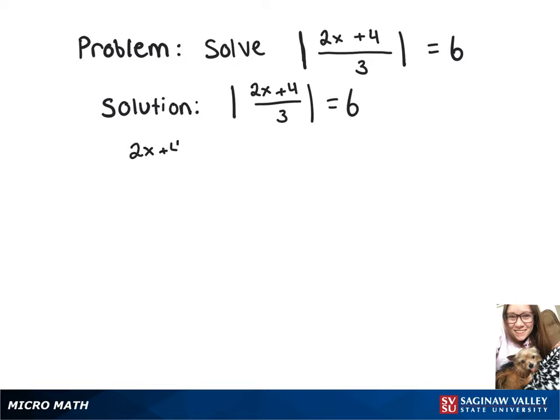We're going to have 2x plus 4 over 3 equals 6, or 2x plus 4 over 3 equals negative 6.